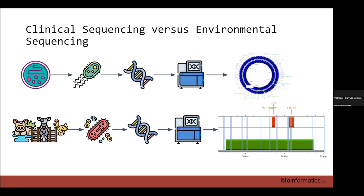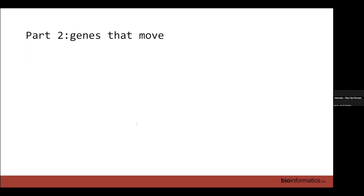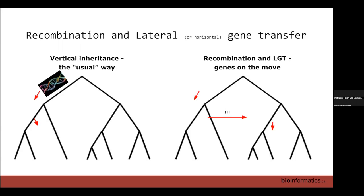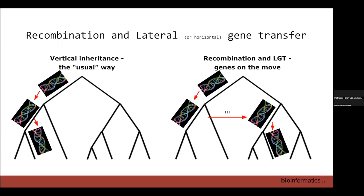This is a problem we can't really avoid because of the fundamental importance of environmental sampling in identifying the source and patterns of transmission of antimicrobial resistance along the farm-to-fork continuum. Now we're moving on to the part on lateral gene transfer and some of the problems we have with it.